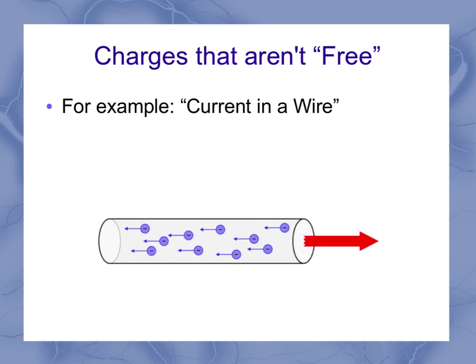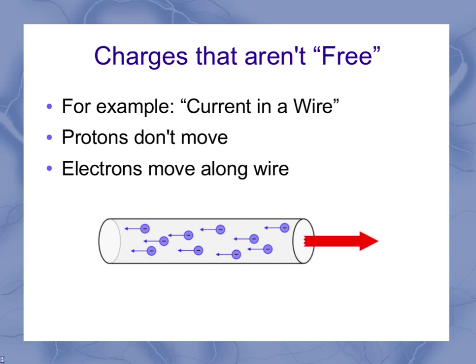So here's a wire laying horizontally. In this case, when we think about the charges, the protons don't move and the electrons can move along the wire. So that means they could go to the left or the right, but they can't go up and down or in squiggles or any other type of motion.